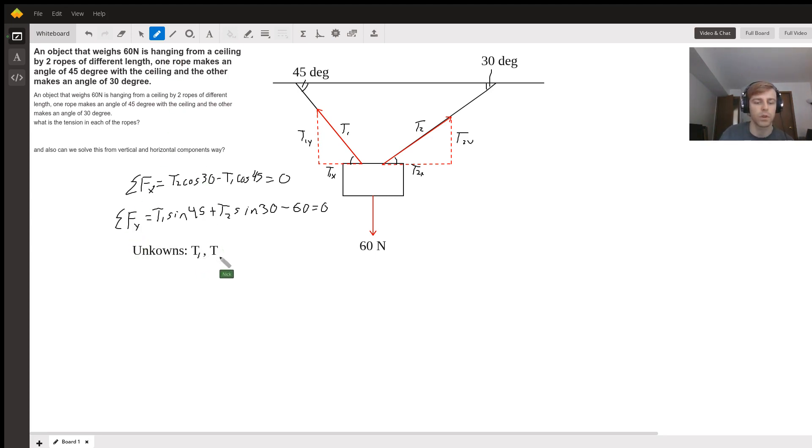It's then just a system of equations that you can solve. I would recommend solving for either T1 or T2 in this equation, then subbing it into this one and solving for the one that you have. So maybe solve for T2 here: T2 equals T1 cosine 45 over cosine 30. Substitute it in, rearrange the algebra, solve for T1. Then solve for the other one once you have that relationship. Okay, yeah.